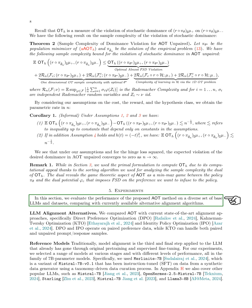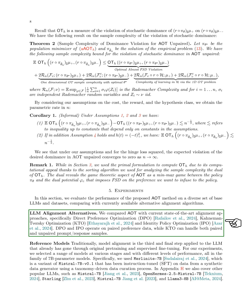In this section, we evaluated the performance of our proposed method, FSD-AOT, on different base LLMs and datasets by comparing it with other alignment algorithms. We compared FSD-AOT with other alignment methods like Direct Preference Optimization (DPO), Kahneman-Tversky Optimization (KTO), and Identity Policy Optimization (IPO). These methods work on paired preference data, except for KTO, which can handle both paired and unpaired prompt-response samples.